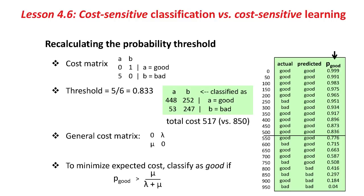You can see that if you count up the numbers above the line, then there's 501 of them, 448 plus 53, of which 53 are bad, and count up the numbers below the line, and look at the number of good ones there, and those are the errors.